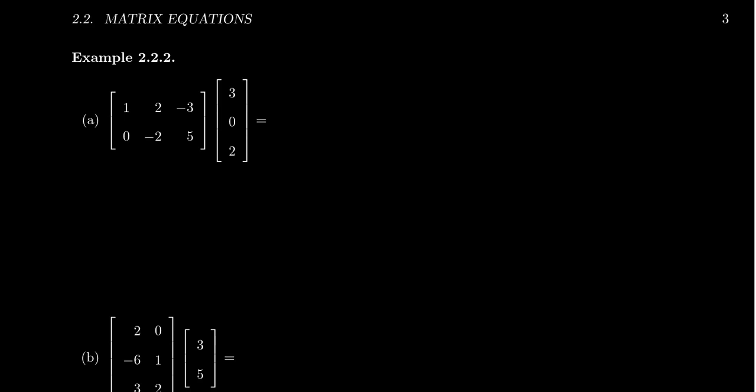So, a few quick examples of this. Let's start off with a 2 by 3 matrix A right here. So we get 1, 2, negative 3. We get 0, negative 2, 5.